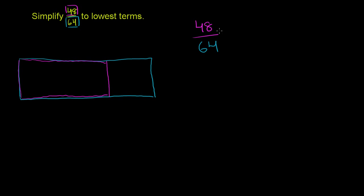So you could say that 48 is equal to, well, what is it? It's 3 times 16. And 64 is 4 times 16, over 4 times 16. Now, this is interesting.